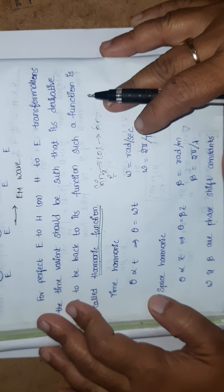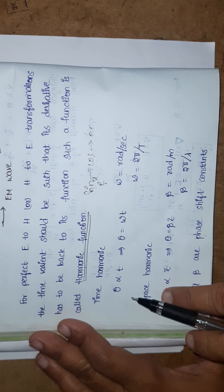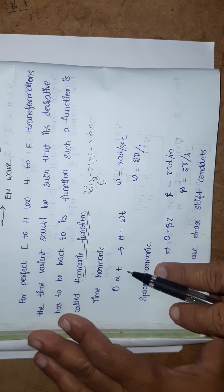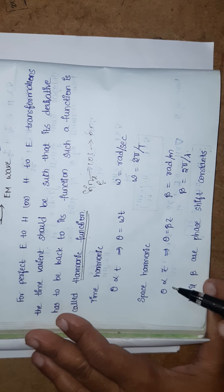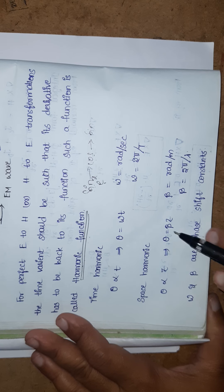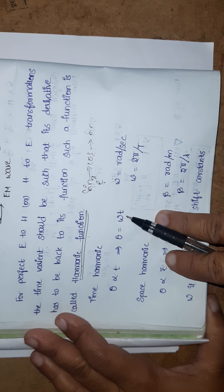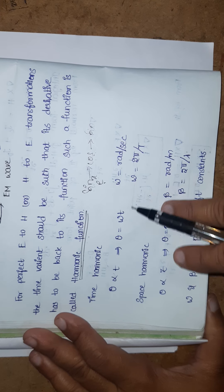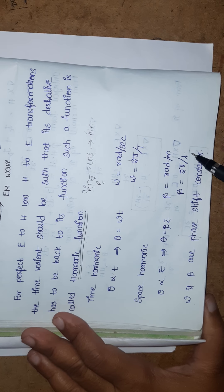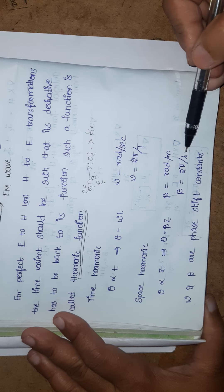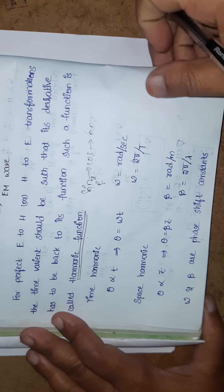There are two types of harmonics: time harmonic and space harmonic. Time harmonic means theta is directly proportional to t; removing the proportionality constant gives omega. Space harmonic means theta is directly proportional to z; removing that proportionality constant gives beta. Omega is in radians per second (2π/T) and beta is in radians per meter (2π/λ), where lambda is the wavelength. Both omega and beta are phase shift constants.